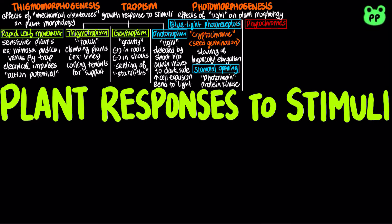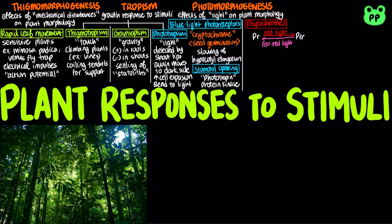Phytochromes exist in two photoreversible states. Red light triggers the conversion of the R-state to the FR-state, whereas far-red light triggers the conversion of the FR-state back to the R-state. The phytochrome system provides the plant with information about the quality of light by sensing the ratio of red and far-red radiation. When a tree is shaded in a forest, most red light is absorbed by the upper canopy, resulting in a shift to predominantly the R-form of phytochrome, which induces the tree to allocate more of its resources to growing taller, promoting apical dominance.